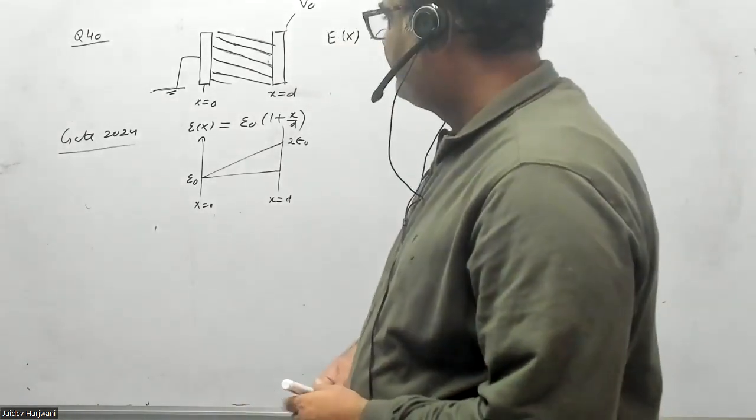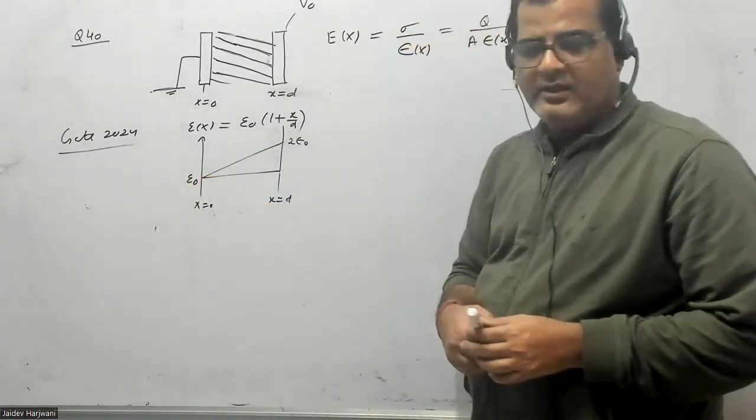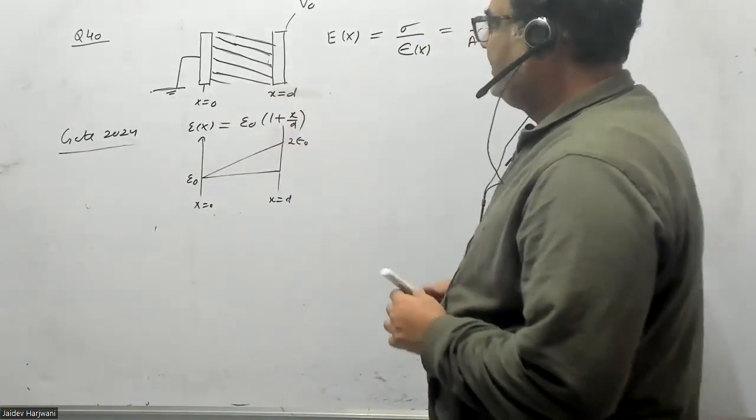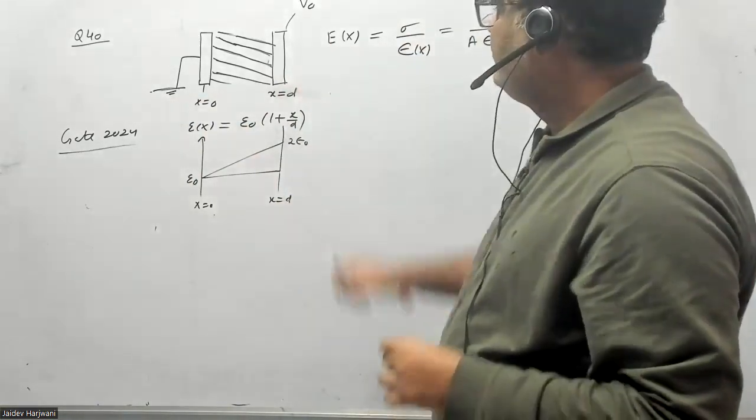Hello students, let us solve one more problem from GATE 2024. Question number is 40. In this question you have been given a capacitor with plates, where one plate is grounded and the other plate is maintained at a potential V naught.